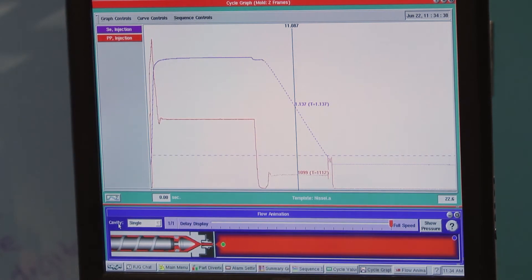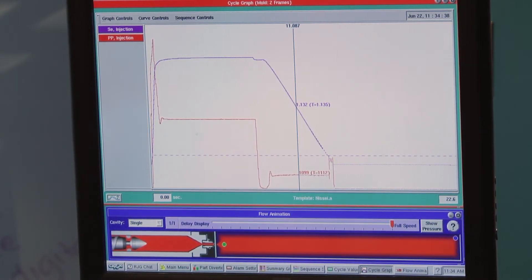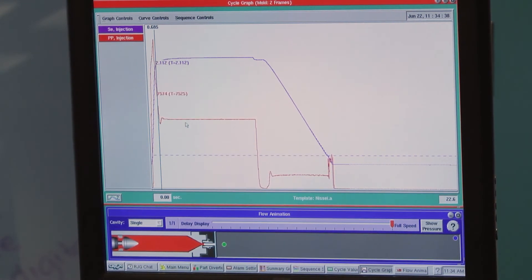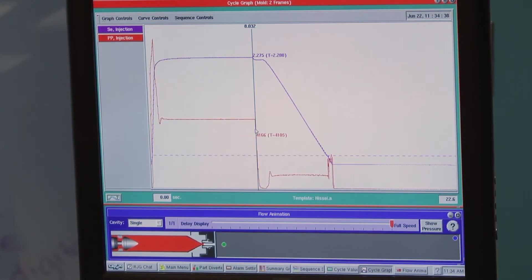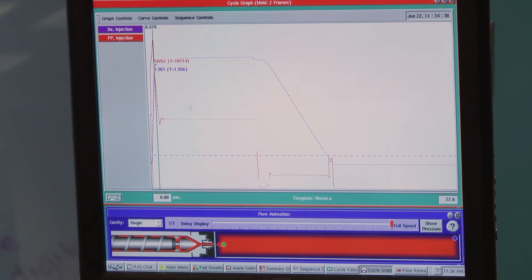That's a quick overview of what some of the things we can see in the injection pressure curve: the filling stage, the pack and hold stage, screw recovery and back pressure. Some of the measurements we can see are fill time, we can see hold pressure, hold time.